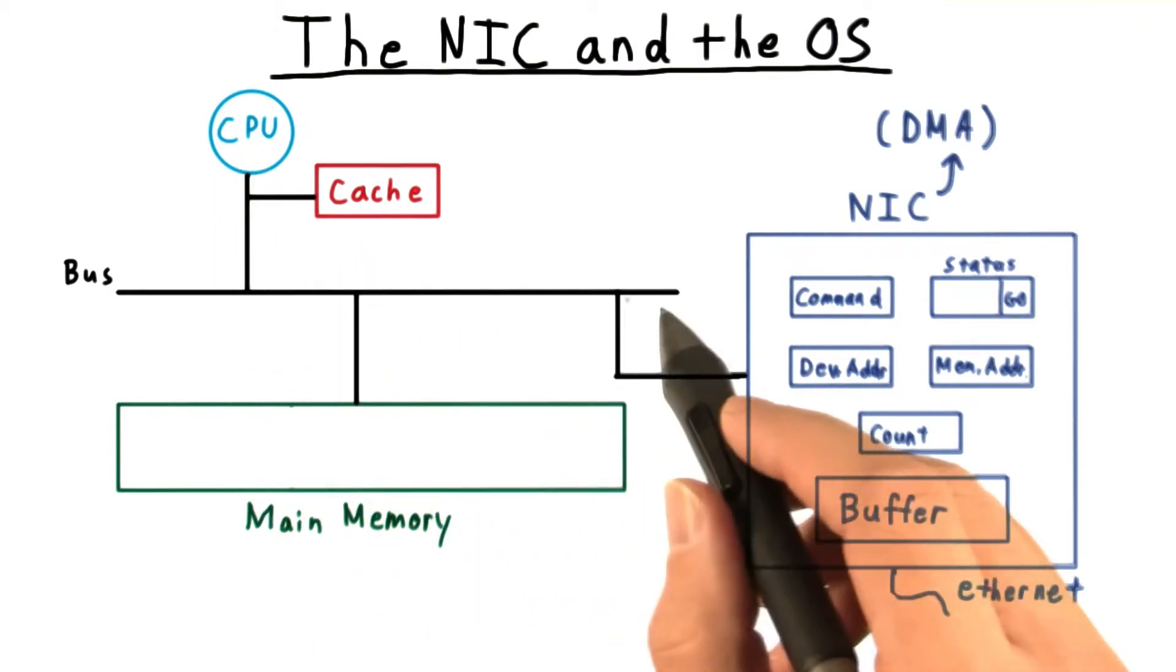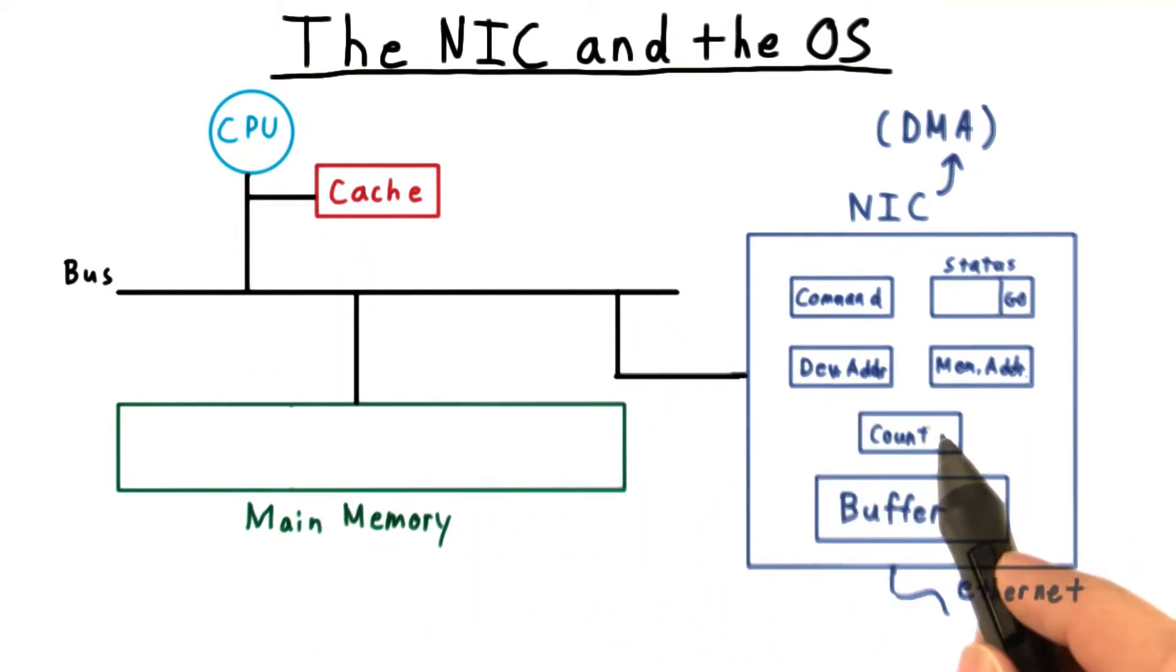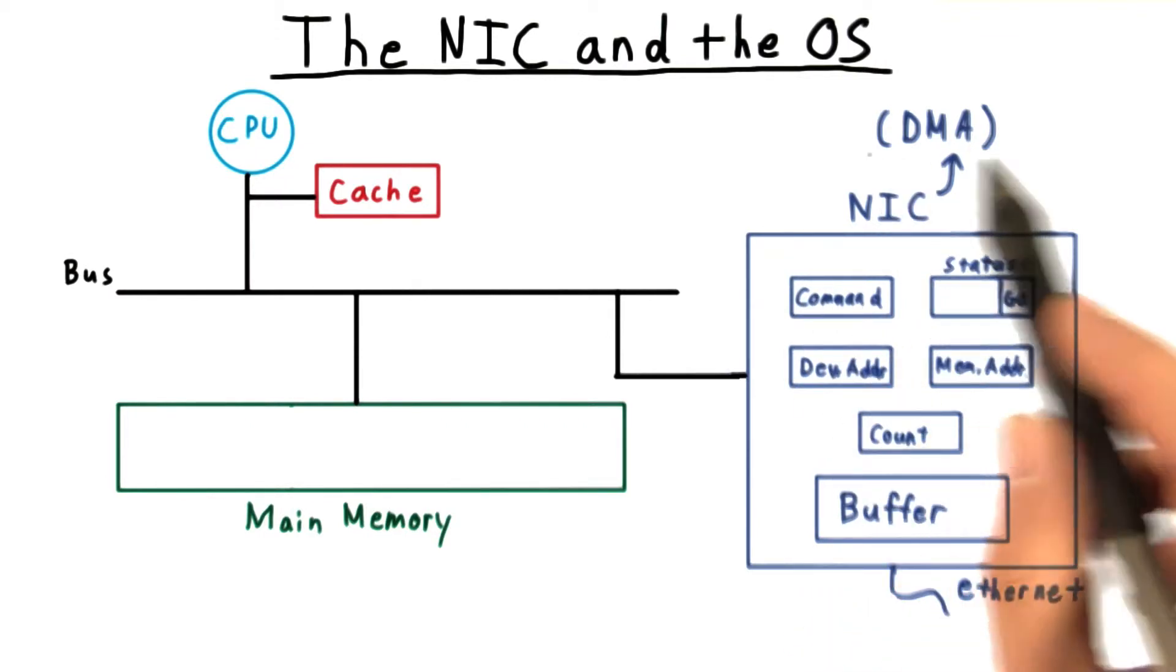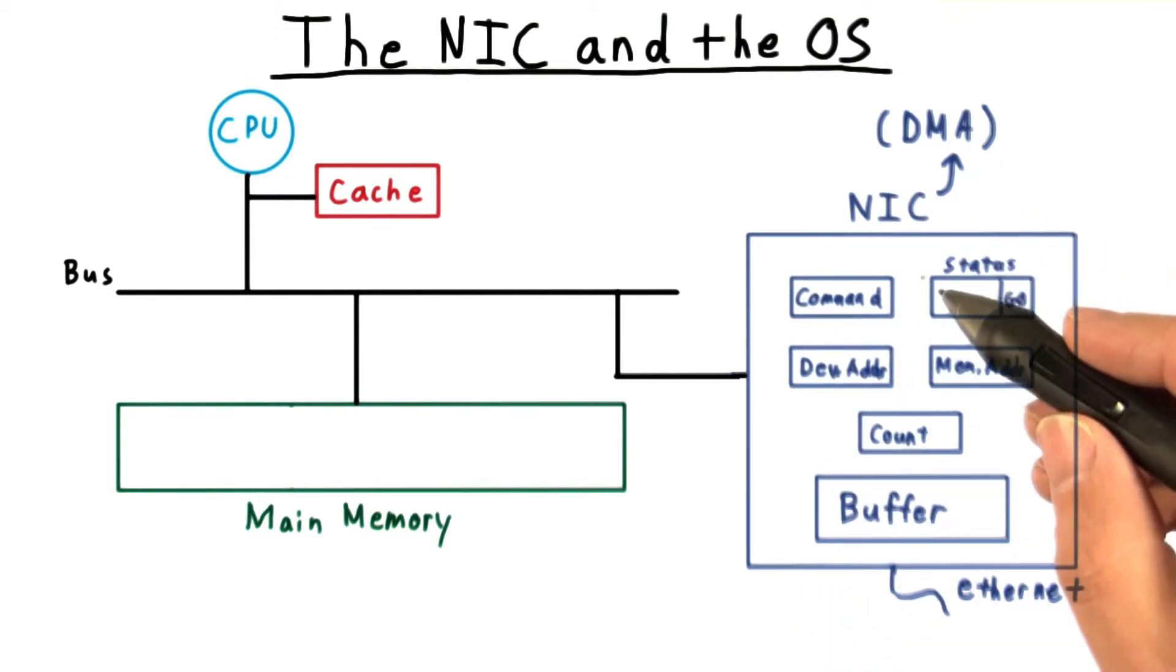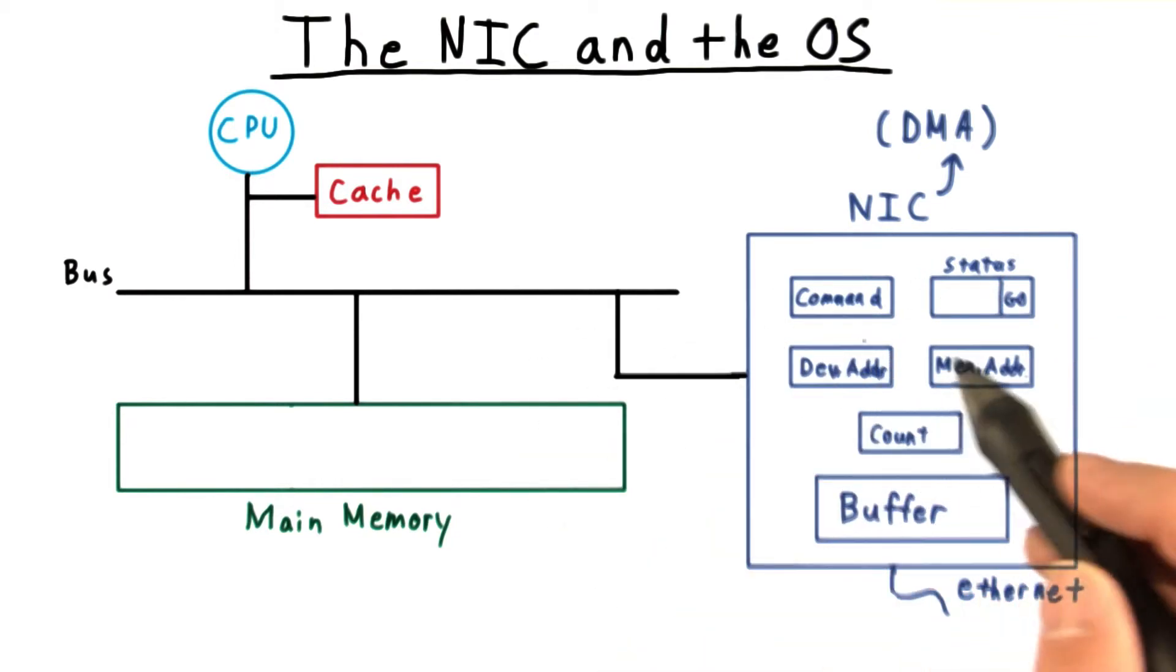Typically, the CPU specifies through the bus the range of memory it wants to be sent, whether it's a read or write, and then sets the go bit to let the NIC begin. The NIC then tries to copy the data as requested.